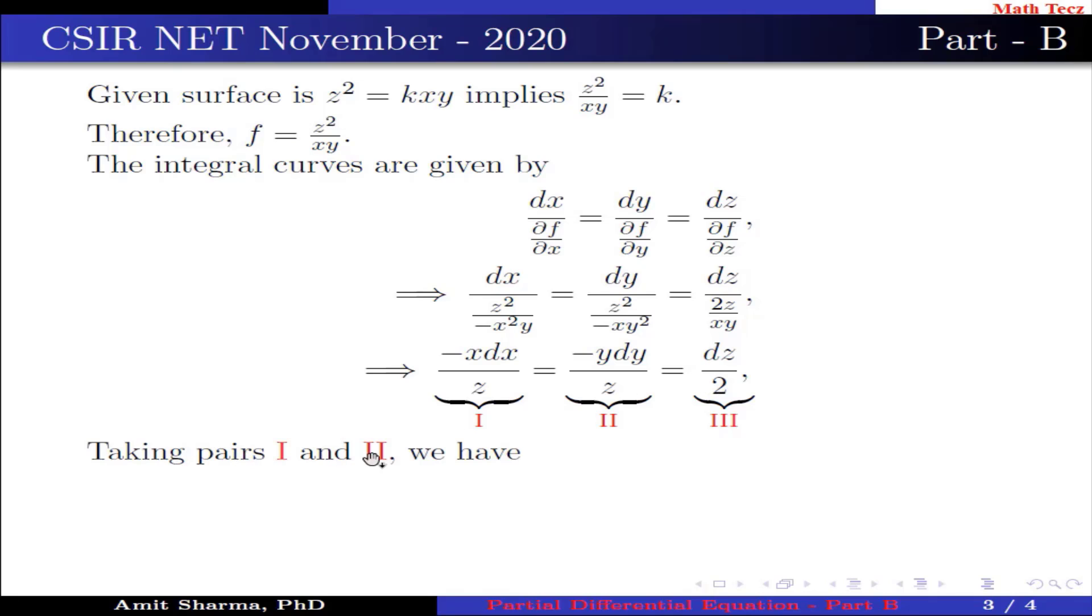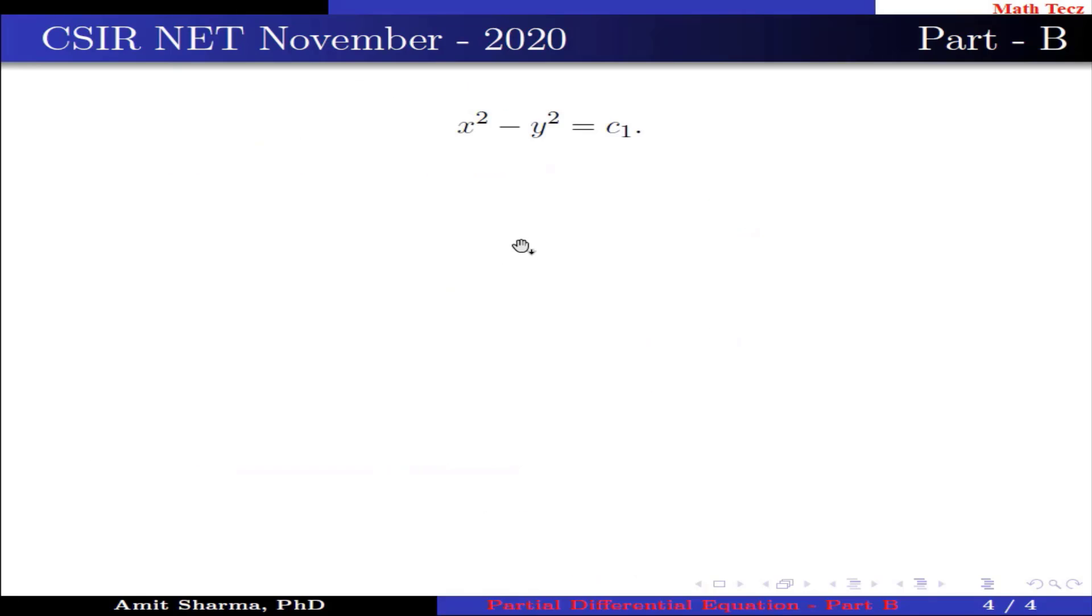Taking pairs I and II, we have -xdx/z = -ydy/z, which implies xdx - ydy = 0. Integrating both sides we get x² - y² = c₁.